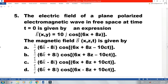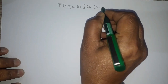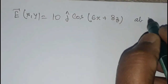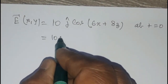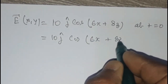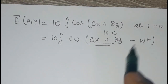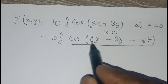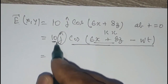Question five: the electric field of a plane polarized electromagnetic wave in free space at time t=0 is given as E = 10 j-hat cos(6x + 8z). This equation is given at t=0, which is why the time term is missing. In general, the full equation would be cos(6x + 8z − ωt). Here 10 is E₀, j-hat is the direction of the electric field, and B₀ = 10/c.